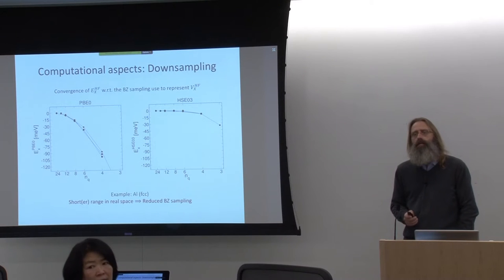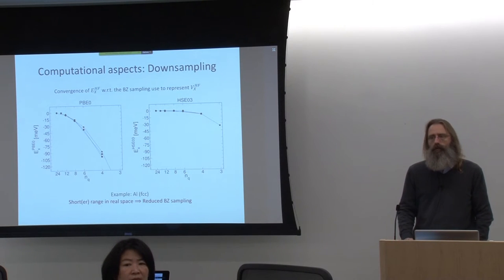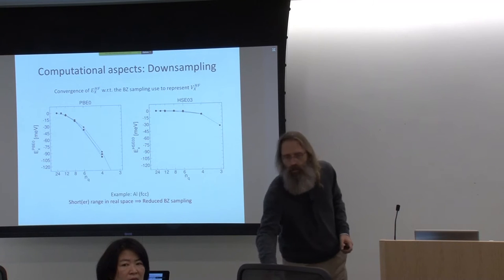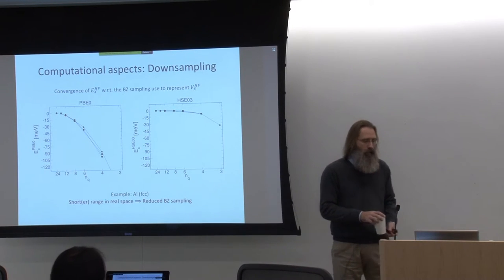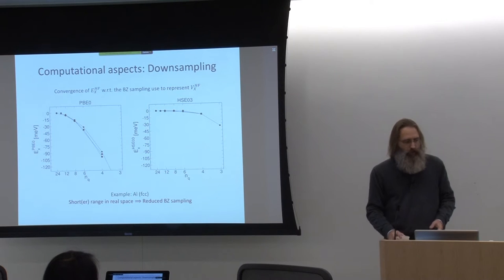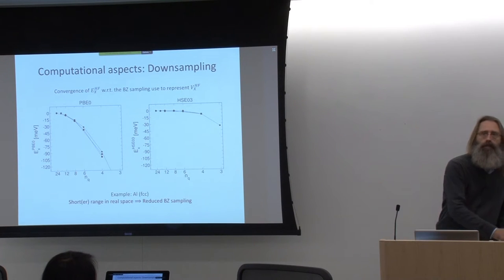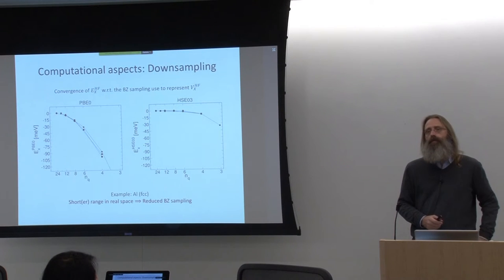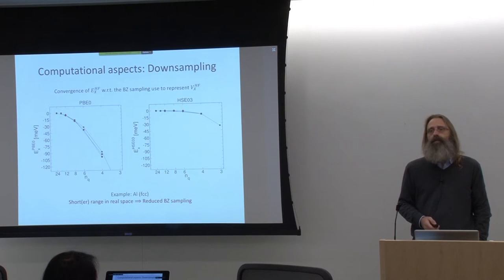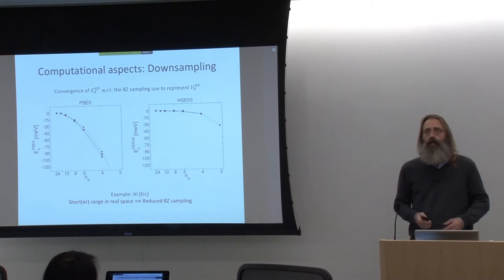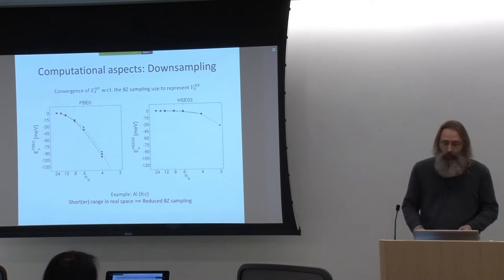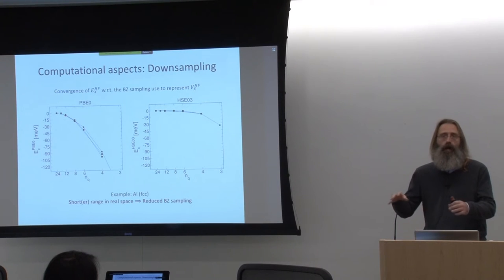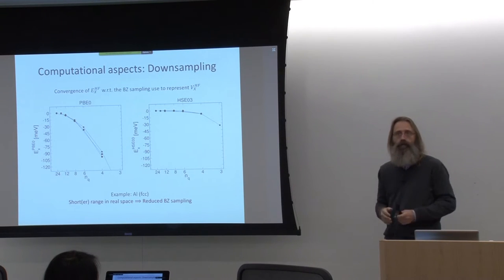If you do Hartree-Fock with Gaussians, because you don't have the FFT log-n trick, then it's N to the 4. If you would do it with Gaussians, actually the scaling is better because you work with a localized basis. If you ignore the local part, it would go to N to the power 4. But in all practical implementations with local basis sets, you can get the scaling down below cubic scaling, because you can exploit the fact that your basis functions will overlap only with ones that are close by.